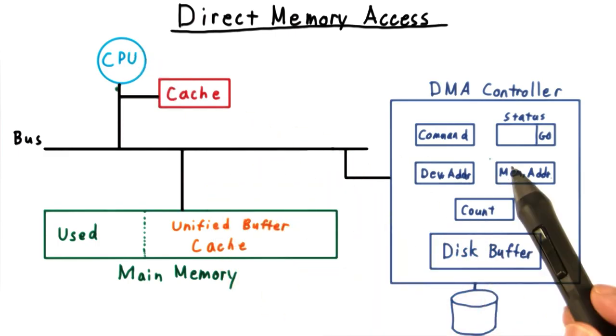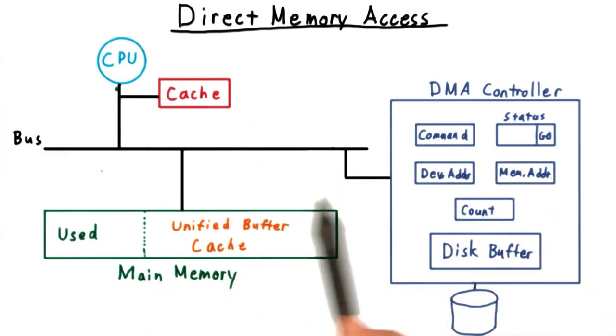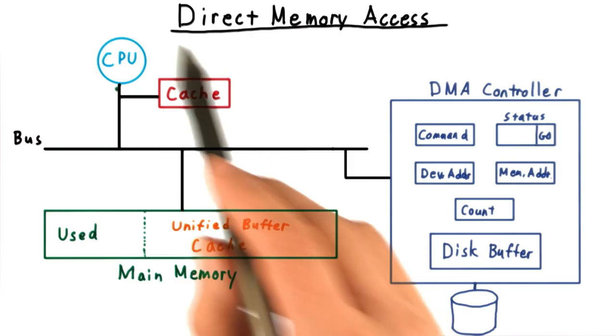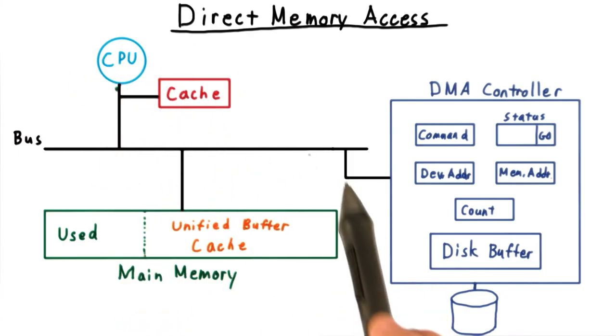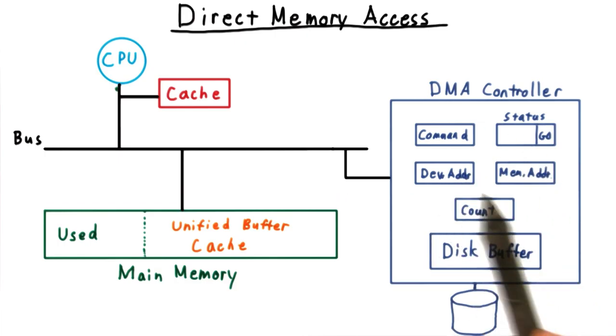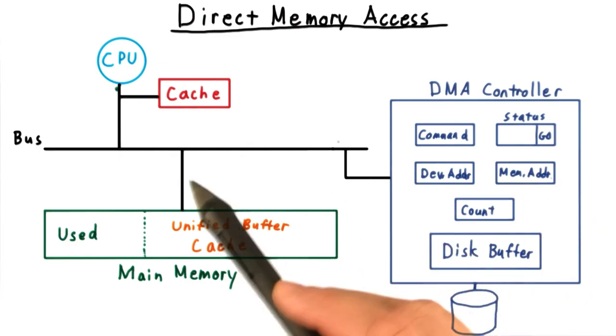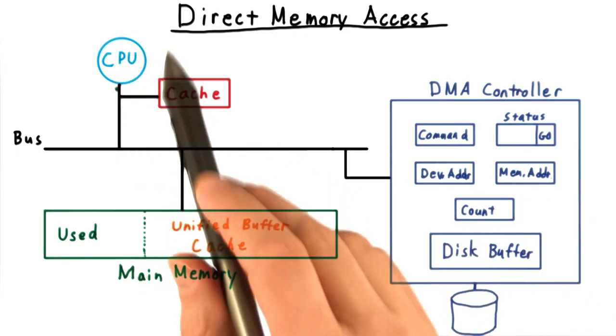Now, the CPU and the device controller are in competition for use of the bus. But because the CPU is going to find most of its data in the cache, it's not using the memory bus all that often, leaving it for the device controller. This phenomenon is sometimes called cycle stealing, as the device controller is able to steal cycles on the memory bus away from the CPU.